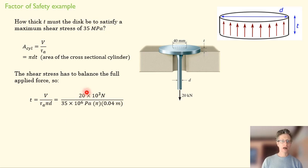This is our overall resultant force, and then that's pi times the diameter of that circle. And we find that the thickness of that disk has to be almost five millimeters, so half a centimeter.